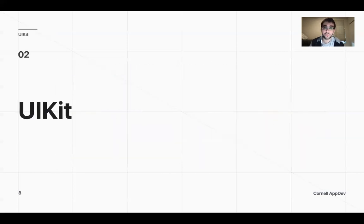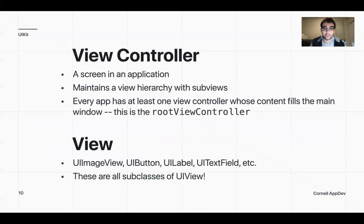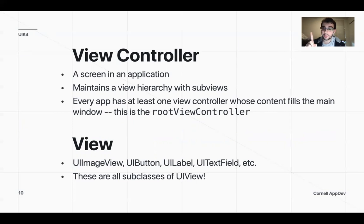UIKit is a framework that Apple gives you that lets you work with core objects you'll see on your screen. By framework, it just means there's a lot of code you don't see — you just work with the higher level of it. There are basically two core objects: you have the view controller, which is the screen and manages the hierarchy of all your subviews. Every single app has at least one view controller, called the root view controller, and we're going to use that when we start coding in our demo.